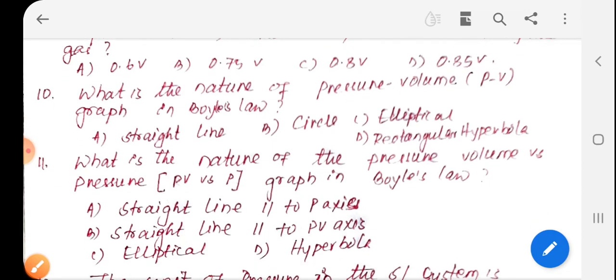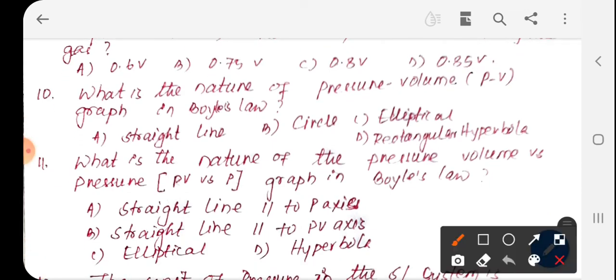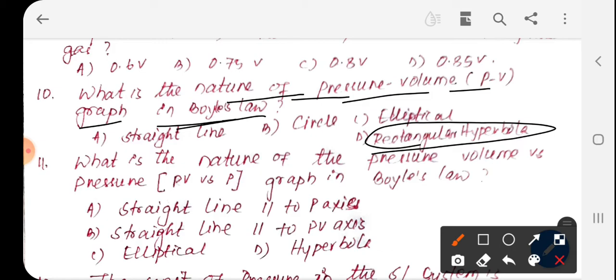Question number 10: What is the nature of the pressure-volume graph in Boyle's Law? In Boyle's Law, the pressure-volume graph is a rectangular hyperbola.